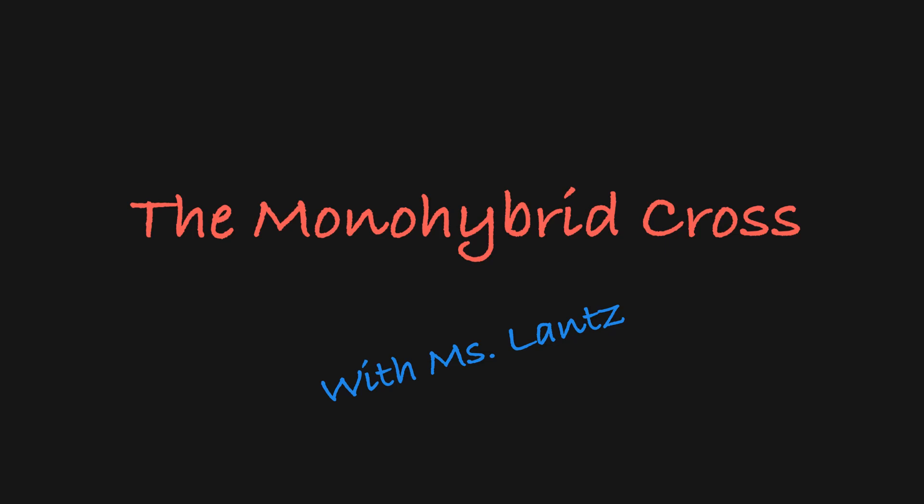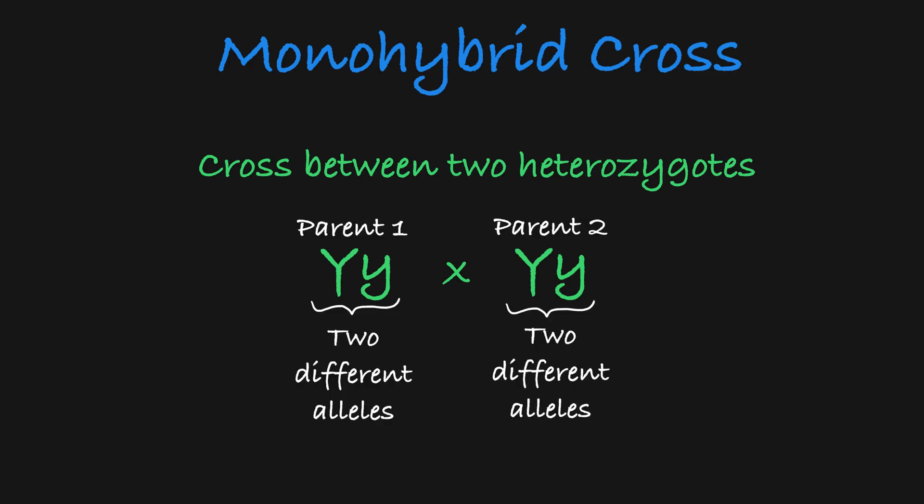In this video, we will walk through a monohybrid cross. A monohybrid cross is a mating event between two parents that are heterozygous in respect to a single gene. This means that each parent carries two different alleles for the gene.